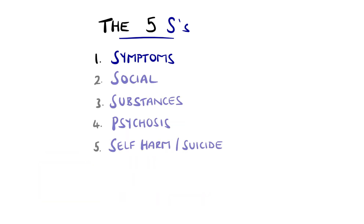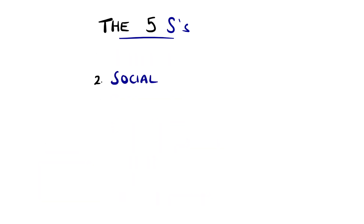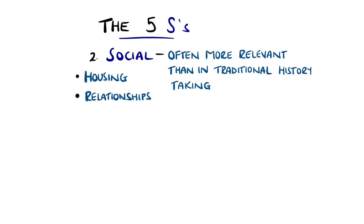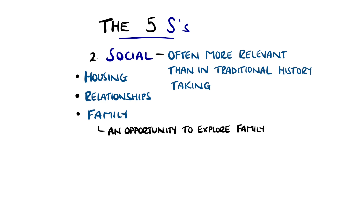Next is social. A large portion of the history will have been gathered from the symptoms, but social history tends to have a bigger impact than in more traditional medical histories, because it often contributes more to the symptoms themselves. These are features such as the living situation, along with who they live with or have a relationship with, and whether there are any children involved — for example, that may prompt thinking of safeguarding. When talking about the family, it's easier to ask about any relevant family history, as there are often familial components to mental health problems.